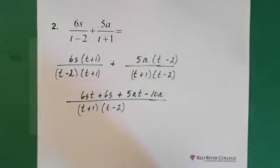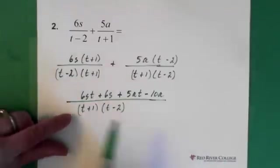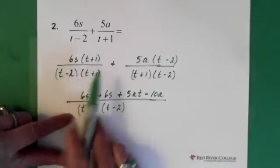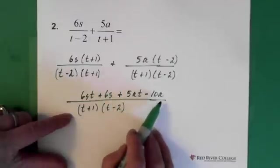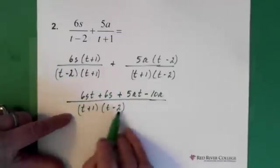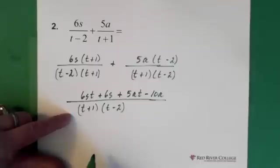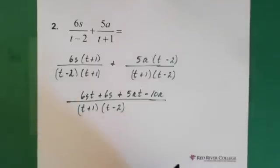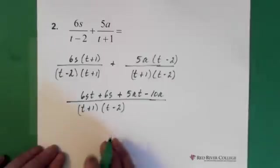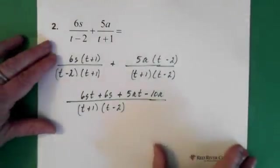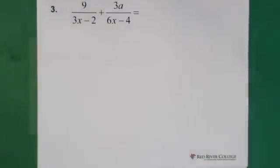So now, I don't see anything that can be added. Make sure this is correct. Yeah, 5at minus 10a. We can leave this denominator the way it is. There's no point in multiplying it through. It's not going to be helpful. And we can't combine any terms here. So this can just stay the way it is. Alright, last one.